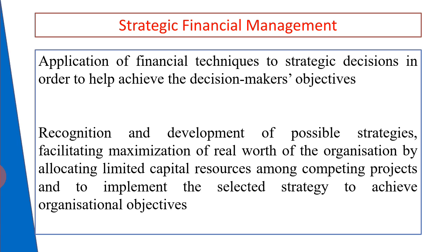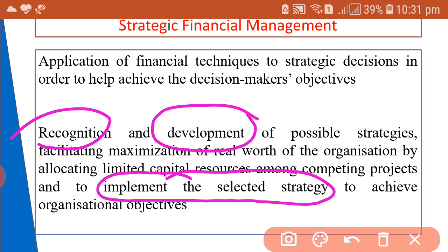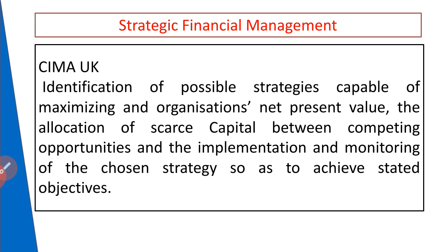It is also to implement the selected strategy to achieve organizational objectives. So Strategic Financial Management involves the recognition of a strategy, the development of strategies, and implementing the selected strategy. The main aim of these strategies is to achieve organizational objectives by allocating different capital resources among different competing projects.